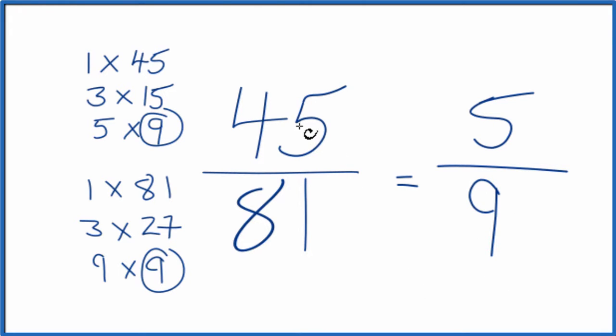So when we simplify the fraction 45 over 81, we end up with 5 ninths. And we can't simplify this any further. It's already been reduced to its lowest terms. If you divide 45 by 81 or 5 by 9, you'll get the same decimal answer. They're equivalent fractions, just that we've simplified 45 over 81 down to 5 ninths.